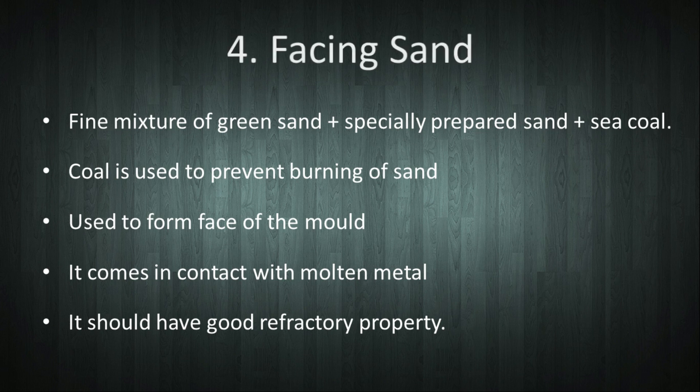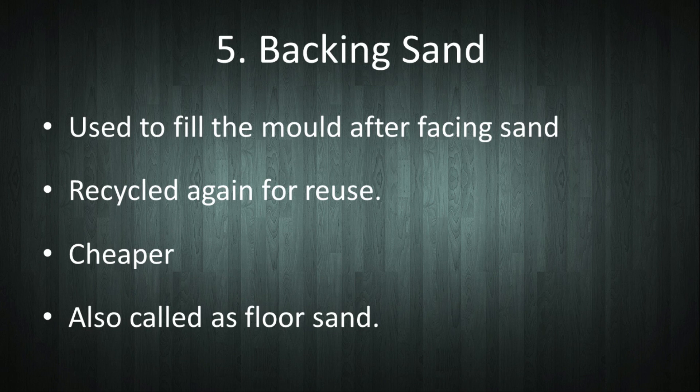Next is facing sand. It is a very fine mixture of green sand and specially prepared sand with sea coal. Coal is used to prevent burning of the sand. This sand is used to form the face of the mold and it directly comes in contact with molten metal. It should have good refractory properties.